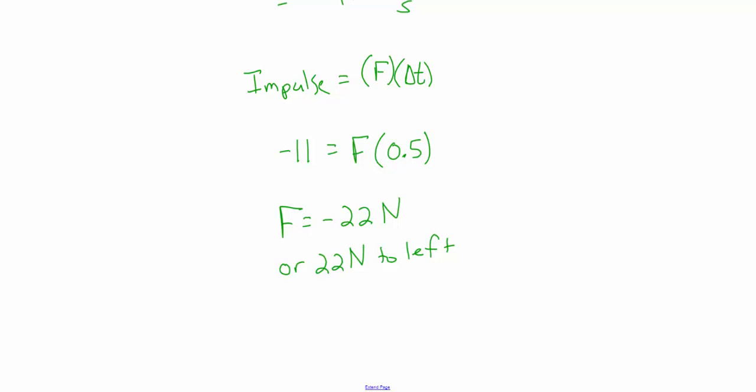We defined the positive x direction as the initial direction the ball was moving, so this force was acting in the opposite direction — to stop it moving to the right and make it start moving to the left. So the force of the tennis racket on the ball is 22 newtons to the left.